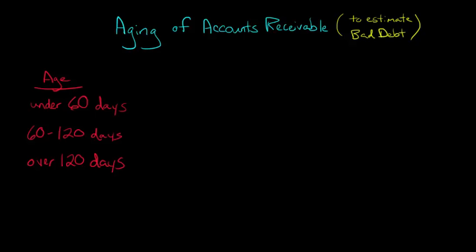So I'm going to go ahead and walk through how we put together one of these schedules. And this aging method, it's also sometimes known as the percentage of receivables method, or you can call it the balance sheet approach because we're looking at receivables themselves, a balance sheet item, instead of looking at the income statement approach, focusing on sales.